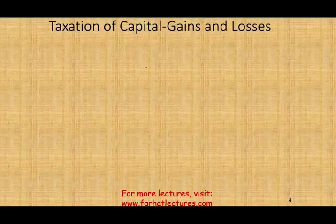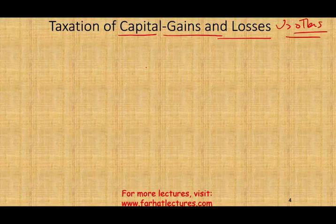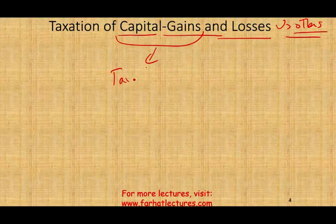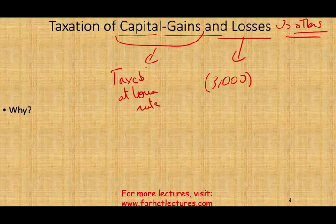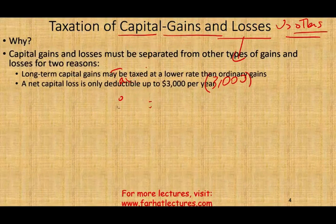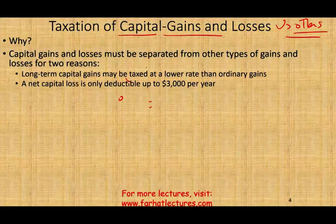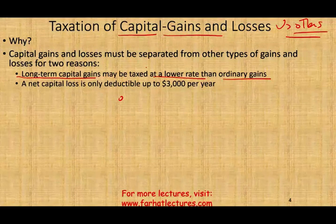Why do we need to differentiate between capital gains and losses versus other gains and other losses? Capital gains could be taxed at a lower rate. If they are capital losses, they could be deductible up to three thousand dollars. Capital gains and losses must be separated from other types because long-term capital gains are taxed at a lower rate than ordinary gains, and the net capital loss is deductible up to three thousand dollars.